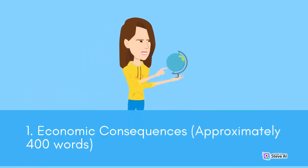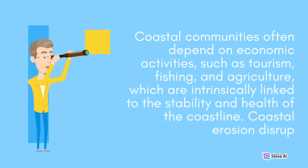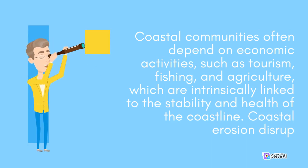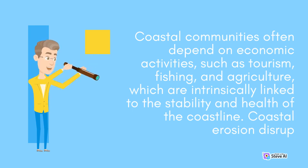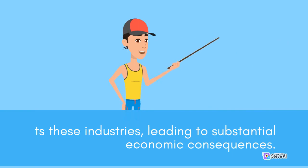1. Economic Consequences. Coastal communities often depend on economic activities, such as tourism, fishing, and agriculture, which are intrinsically linked to the stability and health of the coastline. Coastal erosion disrupts these industries, leading to substantial economic consequences.